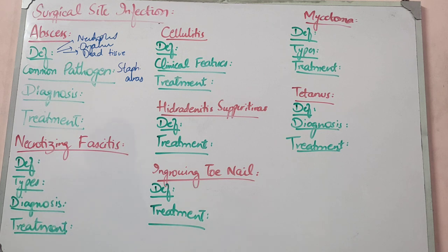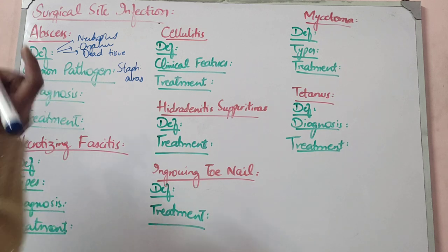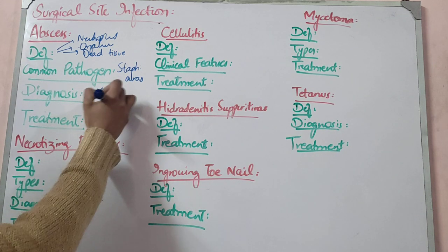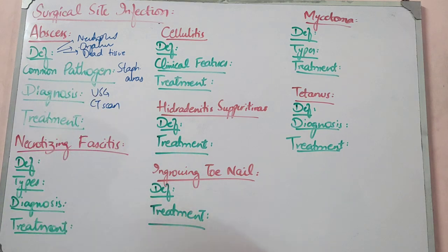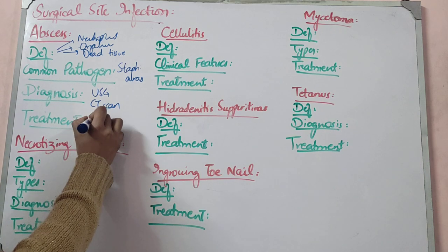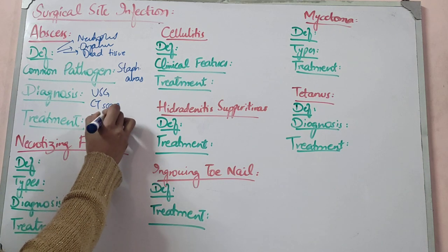For deep abscesses in your body, such as liver abscess, you can use ultrasound or CT scan to locate it. In surgery, when you have a superficial abscess in your skin, it is a clinical diagnosis. The treatment — the most important thing — is incision and drainage (I&D).